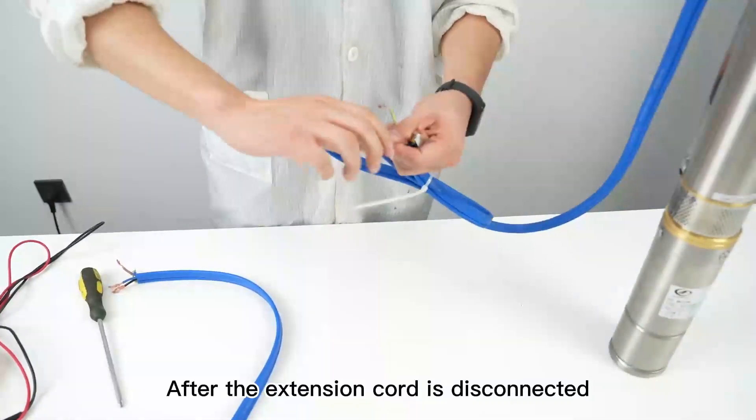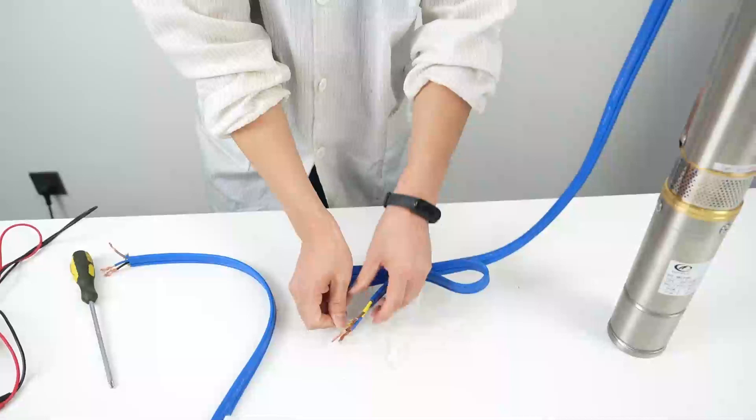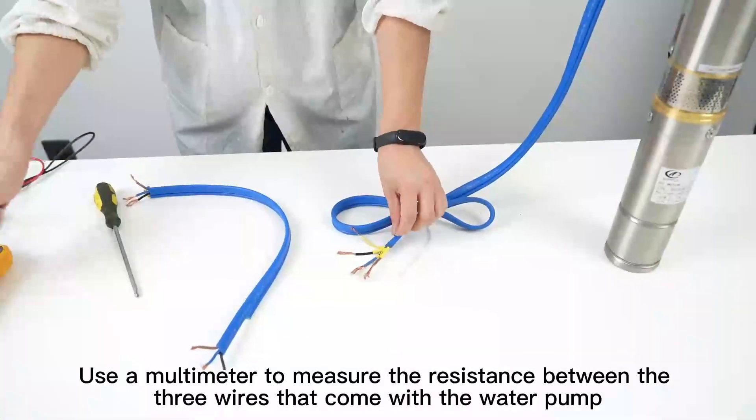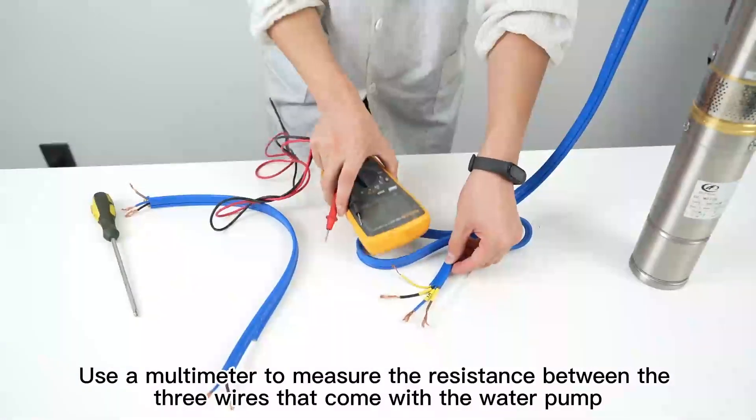After the extension cord is disconnected, use a multimeter to measure the resistance between the three wires that come with the water pump.